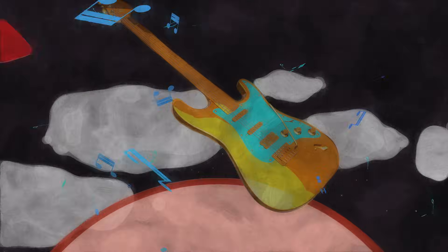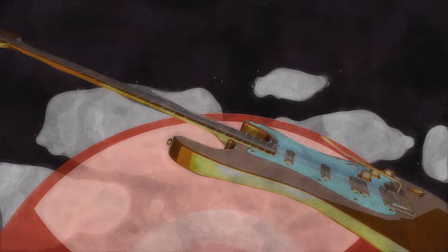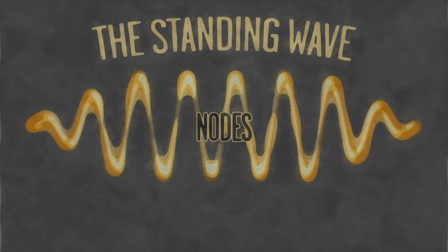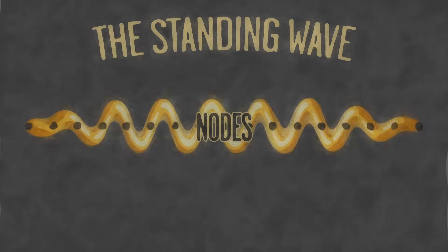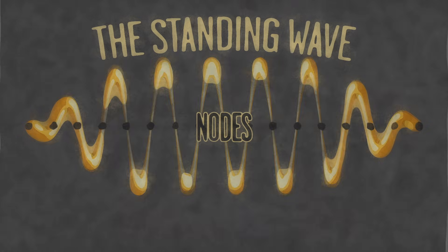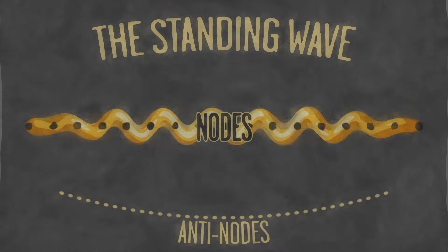When you pluck a guitar string, you create a vibration called a standing wave. Some points on the string, called nodes, don't move at all, while other points, anti-nodes, oscillate back and forth.